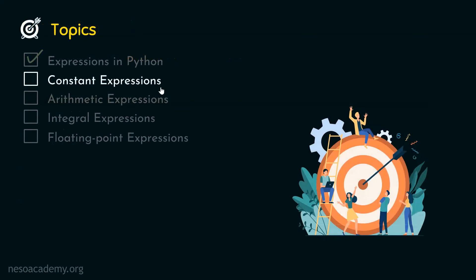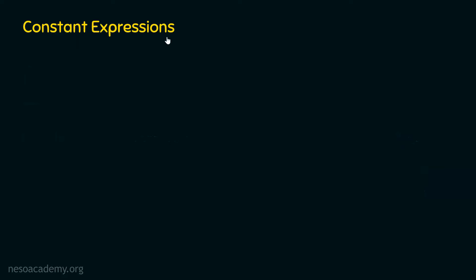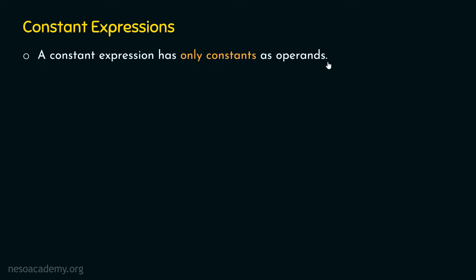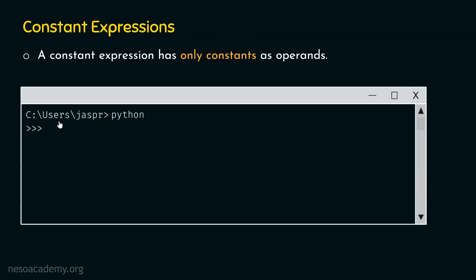Let's move on to constant expressions. What is a constant expression? A constant expression has only constants as operands. It does not matter what operator or operators we have — the operands must be constants. For example, let's type ten plus thirty. This expression is a constant expression because the operands, ten and thirty, are constants, not variables. If we hit enter, we will get forty as a result.